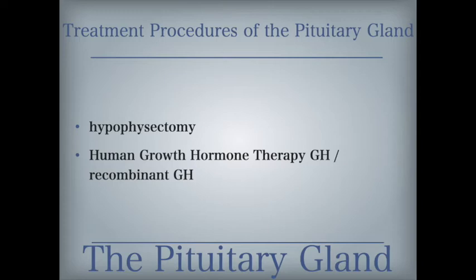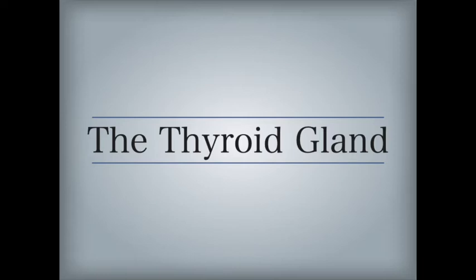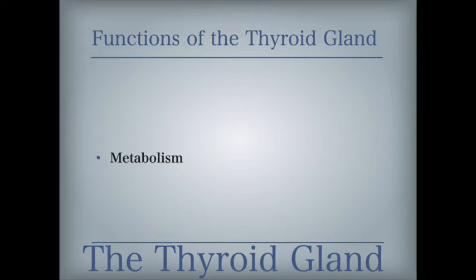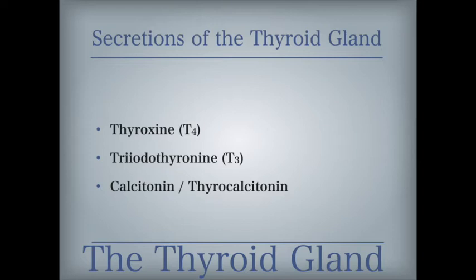The butterfly-shaped thyroid gland lies on either side of the larynx, just below the thyroid cartilage. The secretion of thyroid hormones is controlled by the thyroid-stimulating hormone secreted by the anterior lobe of the pituitary gland. The body's ability to secrete thyroid hormones depends on the uptake of iodine from food and water. The primary function of the thyroid gland is to regulate the body's metabolism — all processes involved in the body's use of nutrients. The primary thyroid hormones are thyroxin and triiodothyronine. Calcitonin, also known as thyrocalcitonin, works with the parathyroid hormone to regulate calcium levels in the blood and tissues, decreasing blood levels by moving calcium into storage in the bones and teeth.